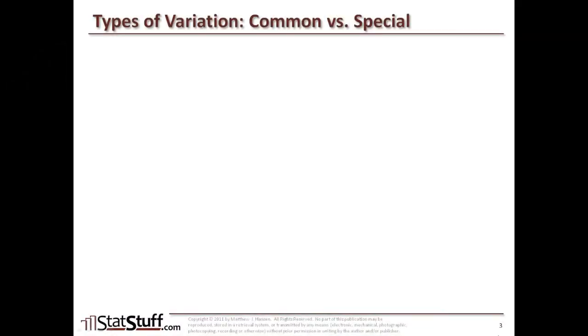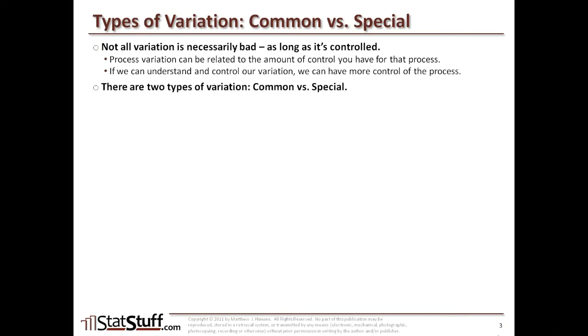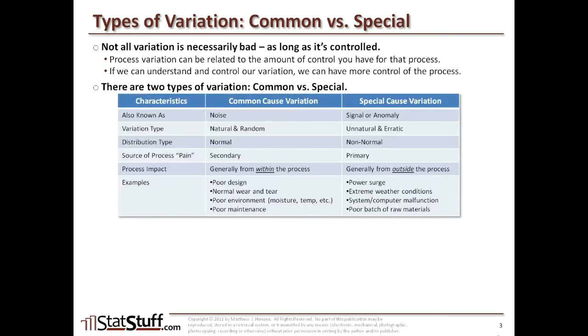Now let's define and compare the two forms of variation: common cause variation and special cause variation. Not all variation is necessarily bad, as long as we can understand and control it. Process variation is related to the amount of control we have — if we can understand and control our variation, we can have more control of the process. Let's look at the characteristics of each one.